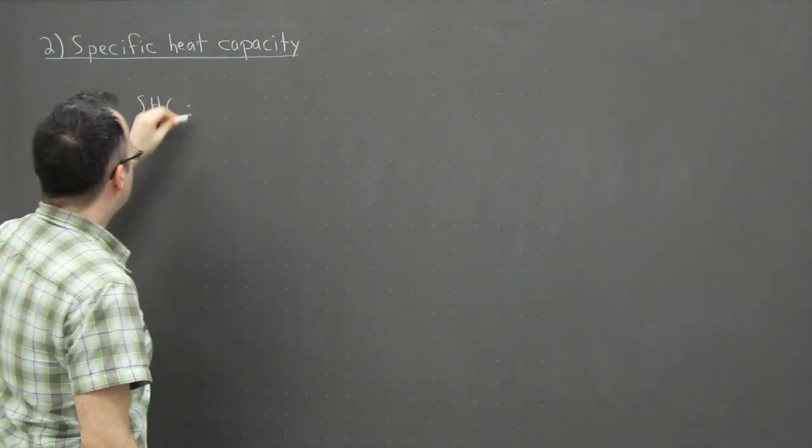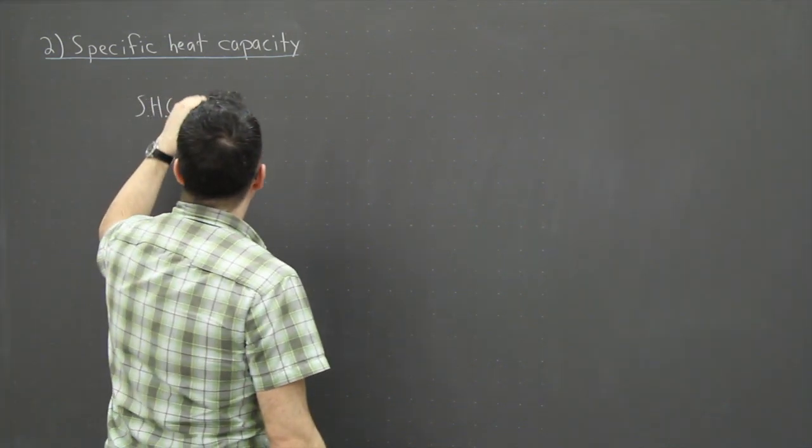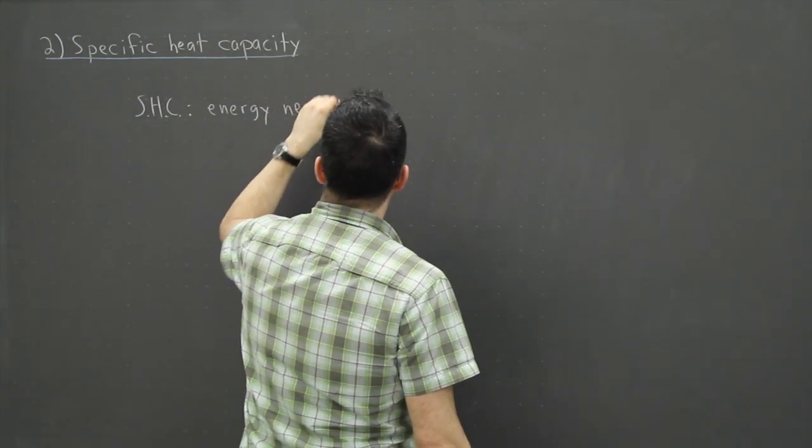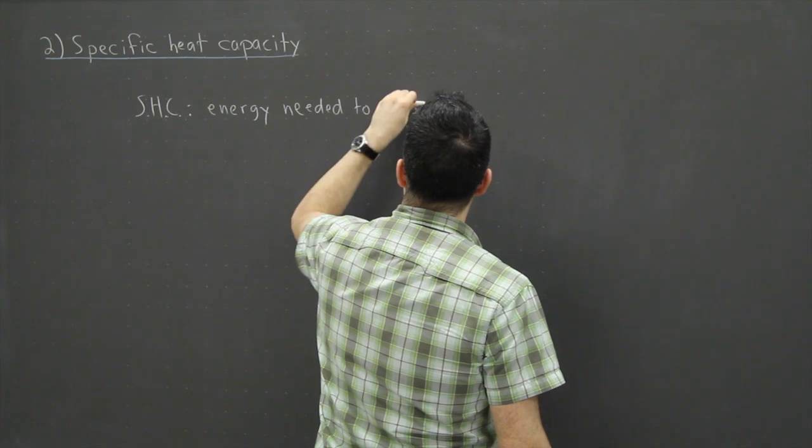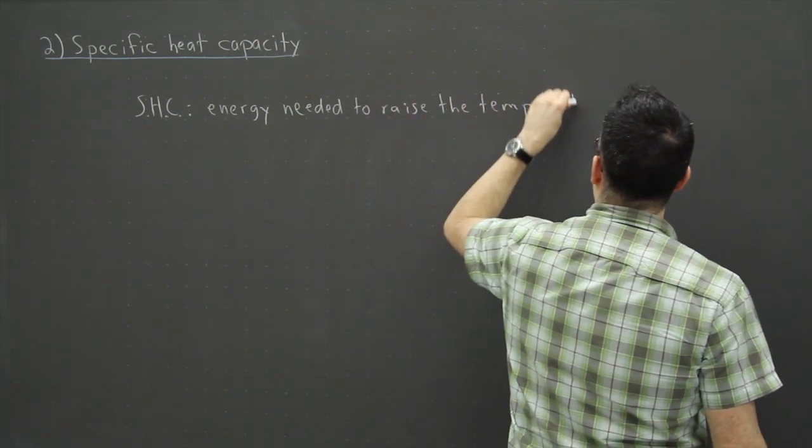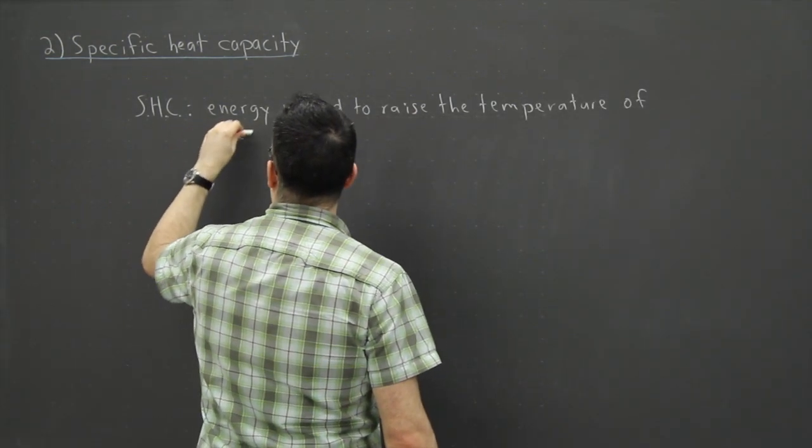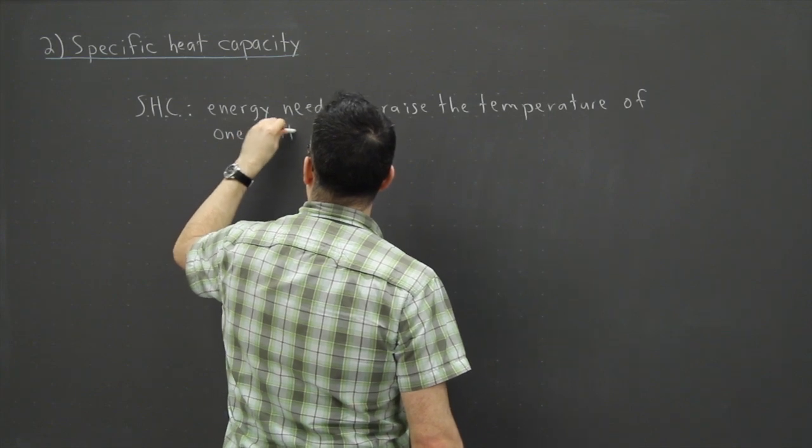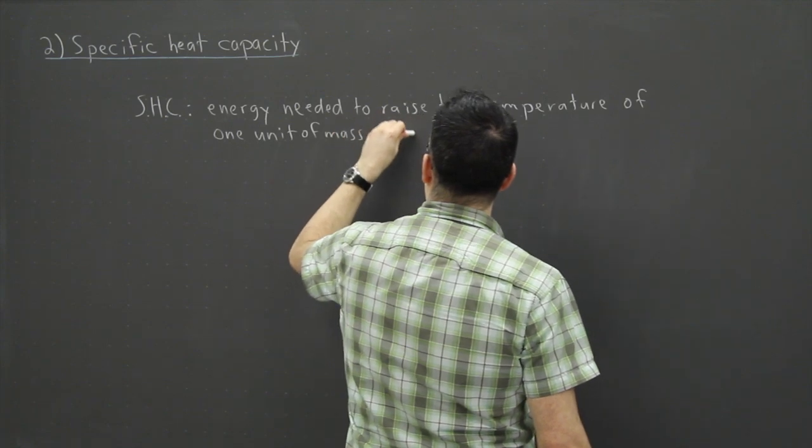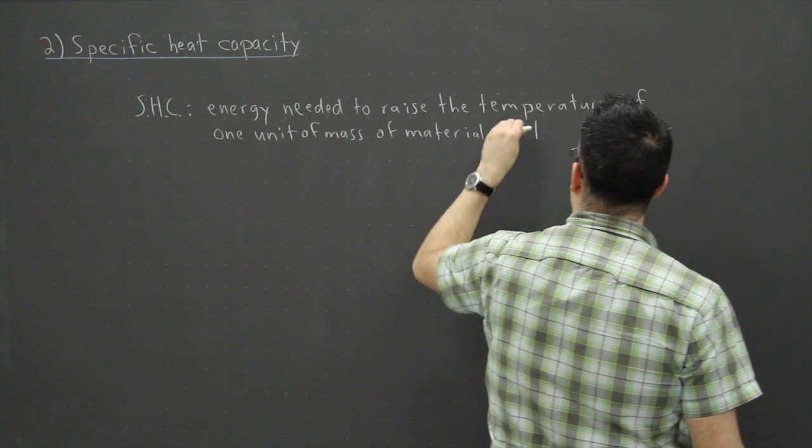So first of all, what is specific heat capacity? I'm just going to use the short format SHC. It's the energy needed—this is an important definition to memorize—to raise the temperature of one unit of mass of material by one degree Kelvin.